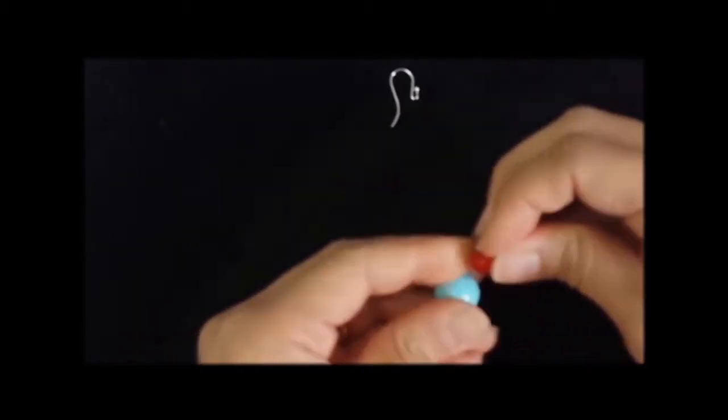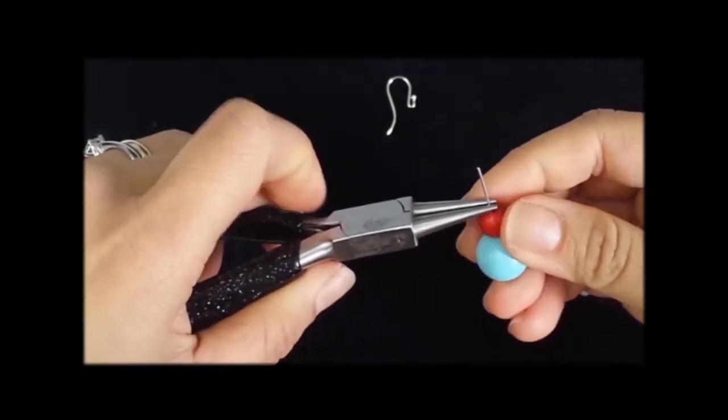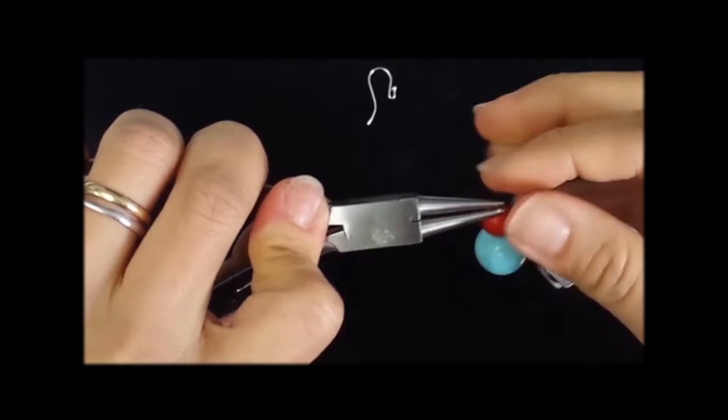Slide two beads onto a ball headed pin. Using a pair of round nose pliers, bend the wire and form a loop at the end of the pin.